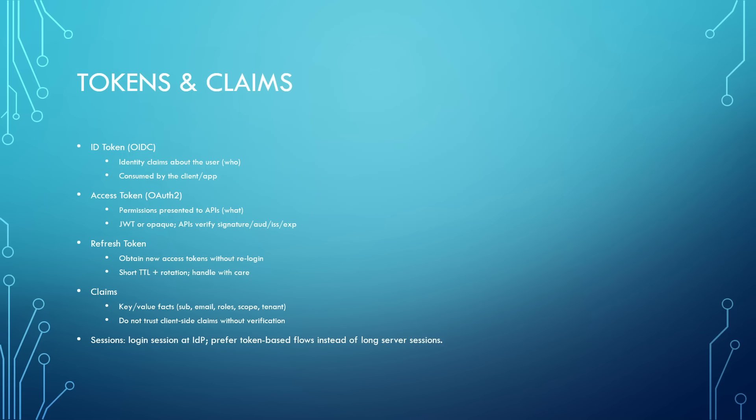The refresh token lets a client get a new access token without making the user log in again. Handle it carefully with short-lived timestamps and rotation. Claims are the key-value fields inside tokens — like sub, email, role, scope, or tenant. Remember there is also a login session at the IDP. Apps don't need long server sessions if token lifetime and refresh are set up well.